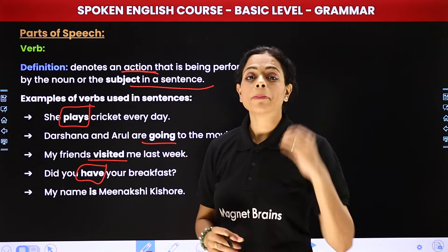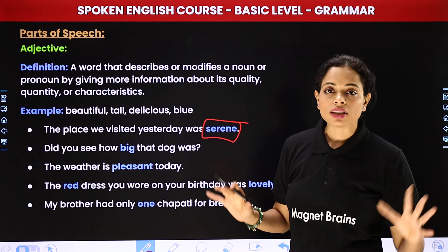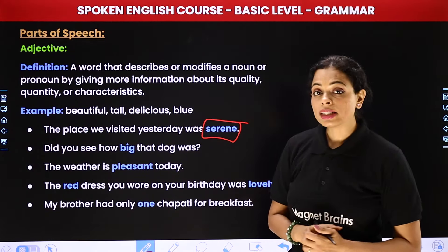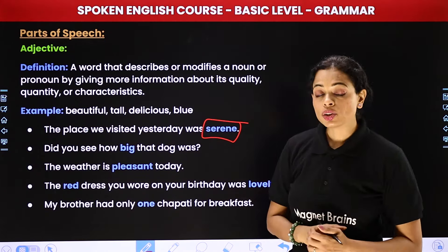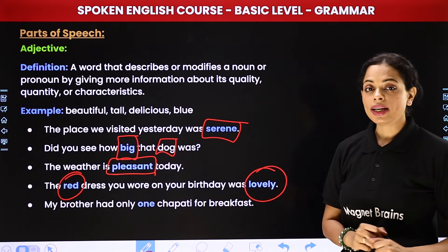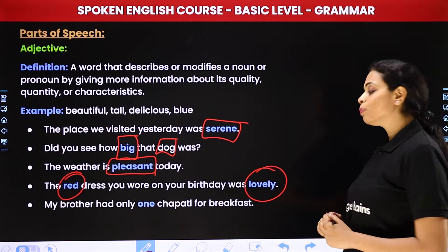For example: 'The place we visited yesterday was serene' — it was serene, serene means very nice. 'Did you see how big that dog was?' — 'big' describes the dog, so this is my adjective. 'The weather is pleasant today' — weather kaisa hai? Acha hai — acha bata raha hai, mere weather ke baare mein information de raha hai. 'The red dress you wore on your birthday was lovely' — ab maine apni jo birthday dress pahni thi, uske baare mein do information mil raha hai: ek ki woh red color ki thi, aur ek ki woh lovely thi — toh yeh dono kya ho gayi? Adjectives. 'My brother had only one chapati for breakfast' — adjective sirf quality nahin batata, quantity bhi batata hai — toh agar usne ek chapati khai toh yeh kya ho gayi? Aapka adjective.